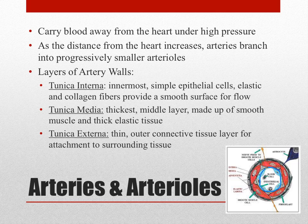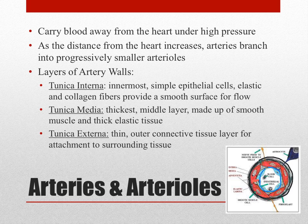The next layer is the tunica media — that's the thickest middle layer, taking up the majority of the space. It is made of muscle and very thick, dense elastic tissue. That allows the walls of the artery to expand with the high pressure of blood leaving the heart, and then to rebound or contract back down, keeping the walls from stretching out and becoming damaged. The outermost layer is called the tunica externa, which is a very thin layer mostly made up of connective tissue that attaches the vessel to surrounding muscles and organs so that the vessels are not constantly shifting position.